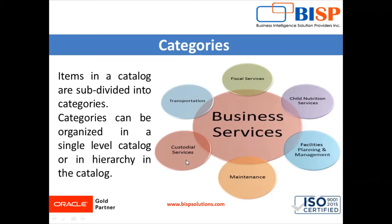Other categories in the Business Services catalog include maintenance and custodial services. In Oracle Fusion, you also have the option to add subcategories. For example, under maintenance, subcategories include preventive maintenance, corrective maintenance, condition-based maintenance, predictive maintenance, and reactive maintenance. Under transportation, subcategories include road, rail, marine, and air transportation.